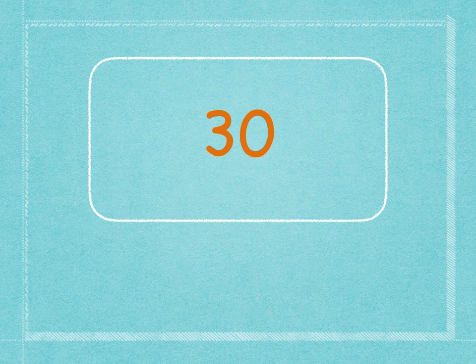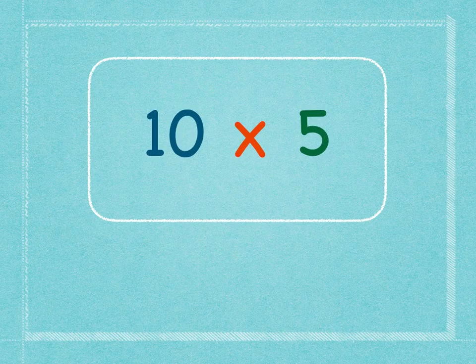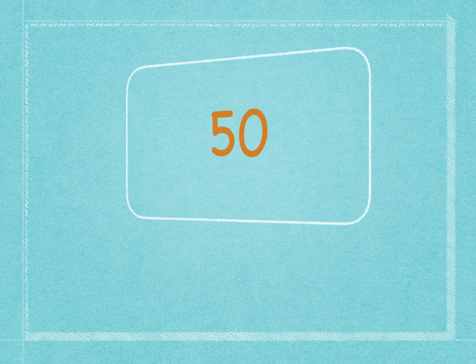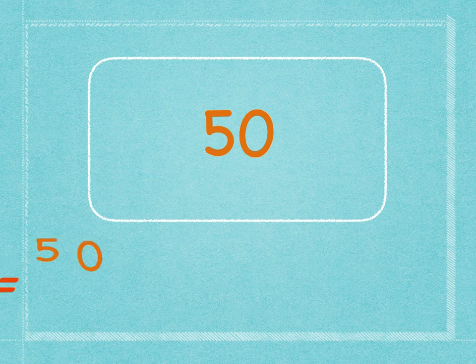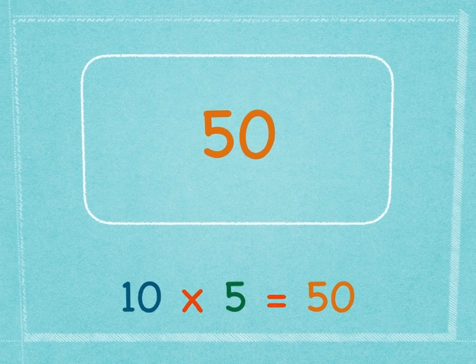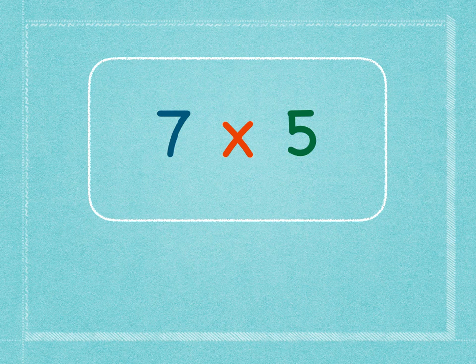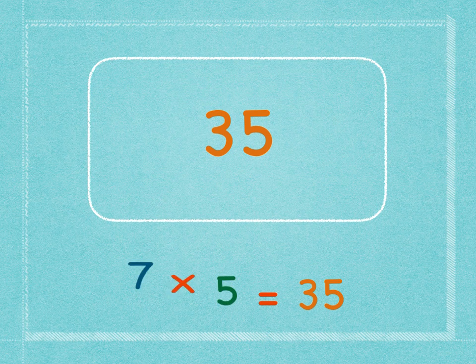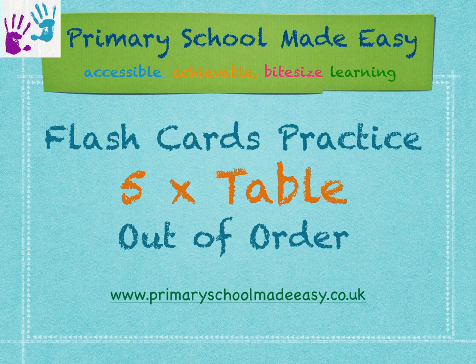Six times five is thirty. Six times five is thirty. Ten times five... Seven times five is thirty-five.